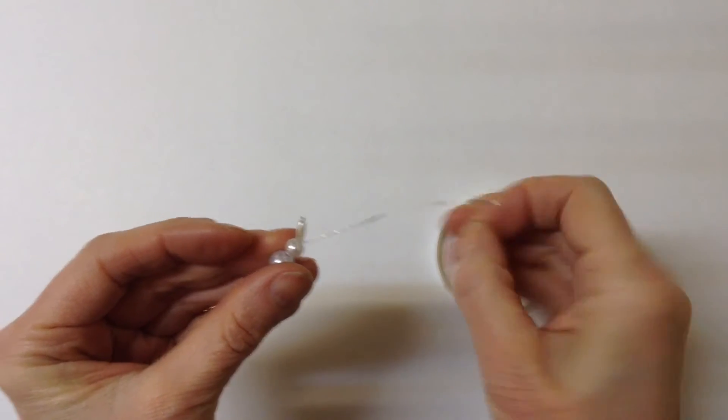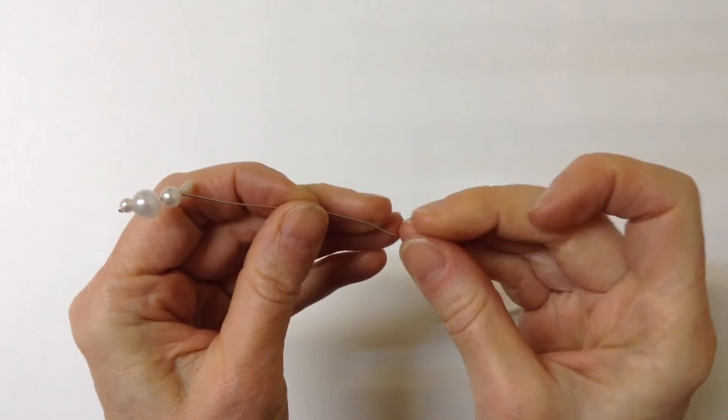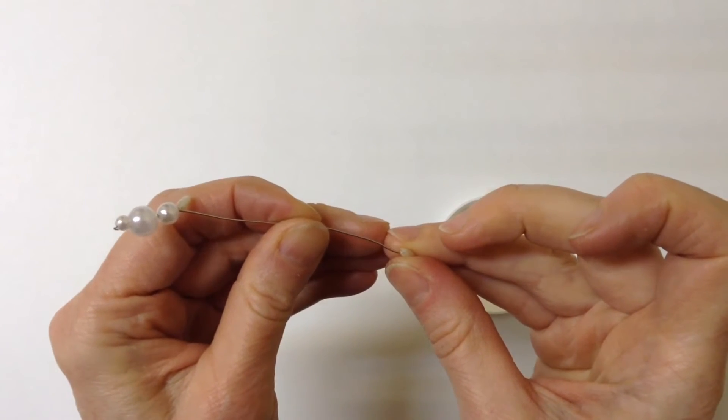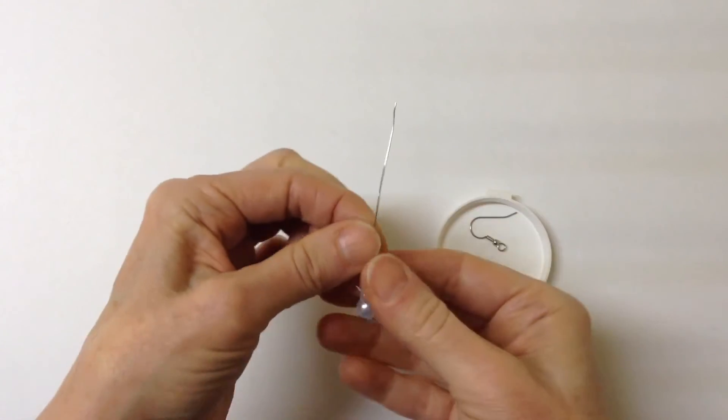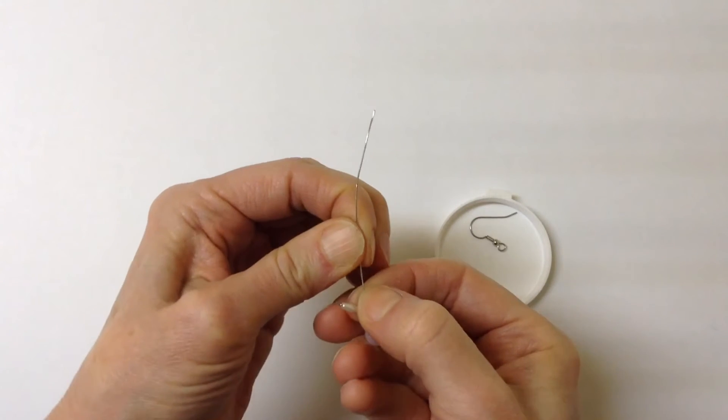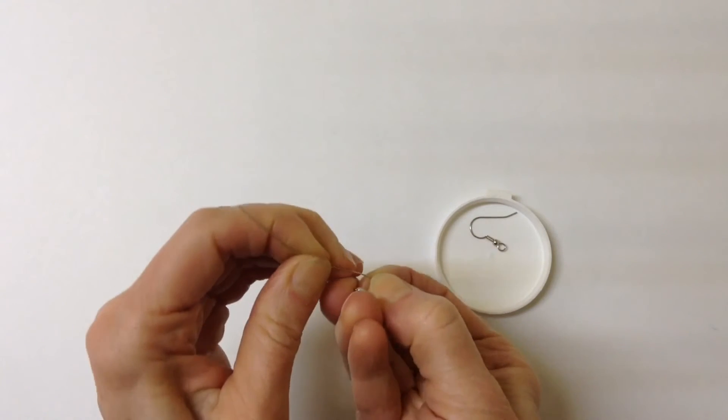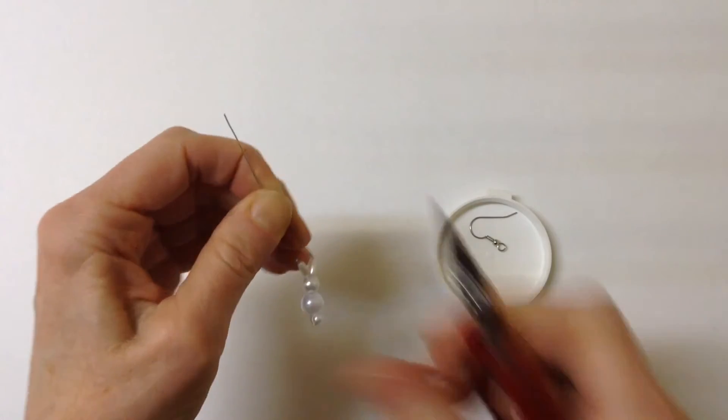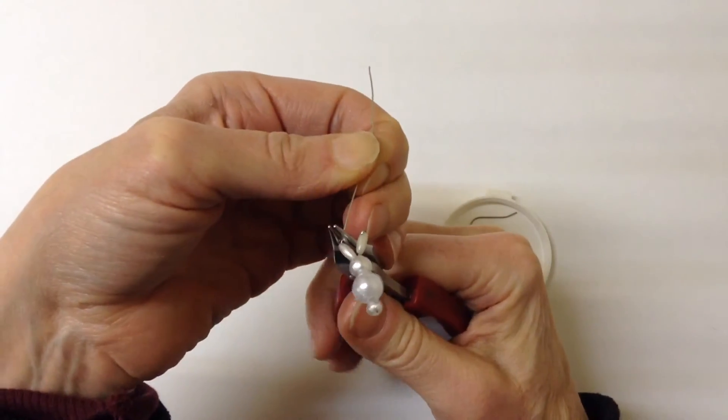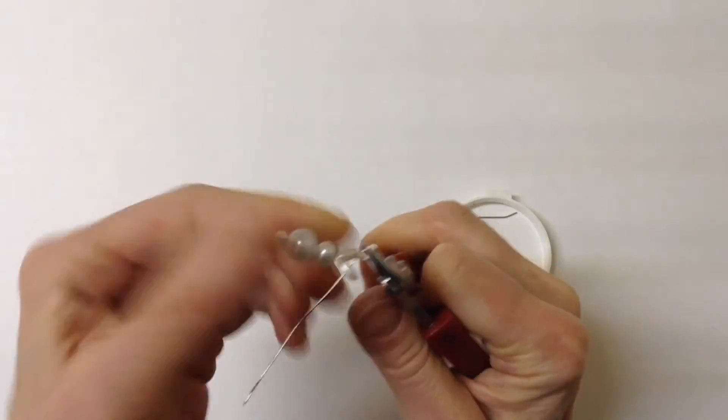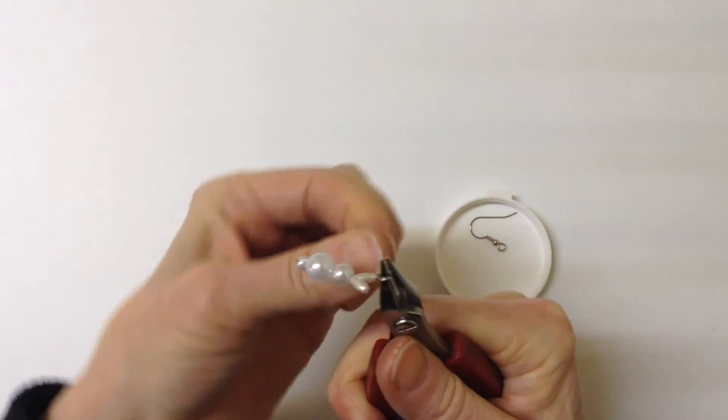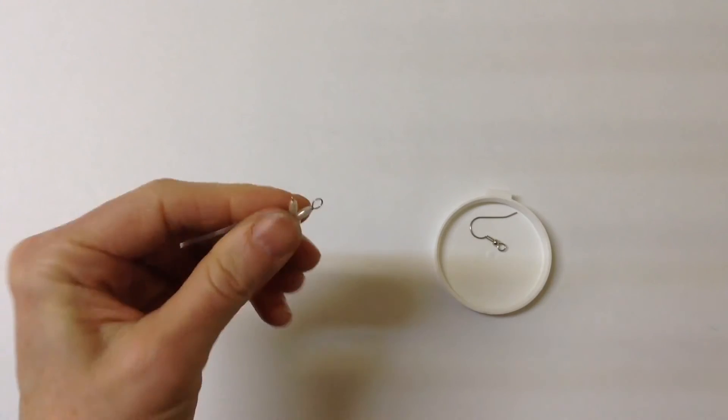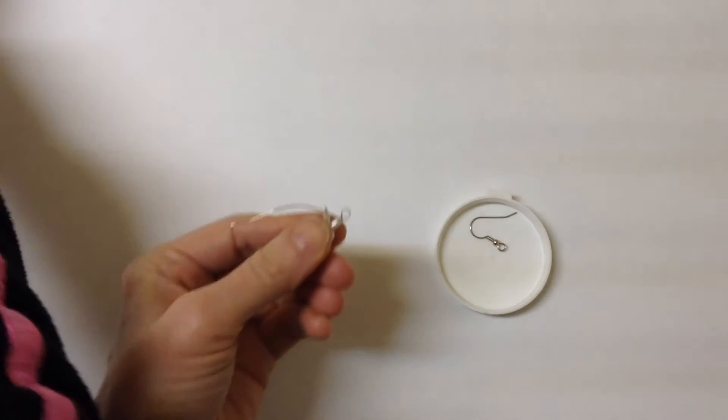Then we're going to put the other oval bead on the wire and then you want to bend it at a bit of a right angle holding that bead down. And with your round pliers you're going to form a little loop around and then twist this wire all the way around and clip it.